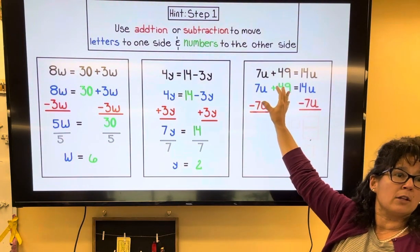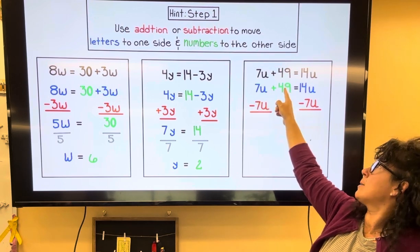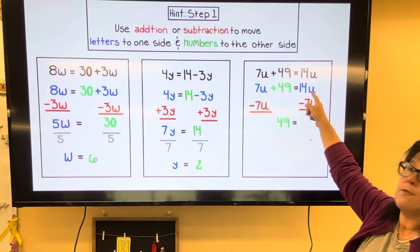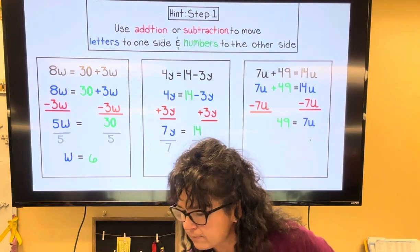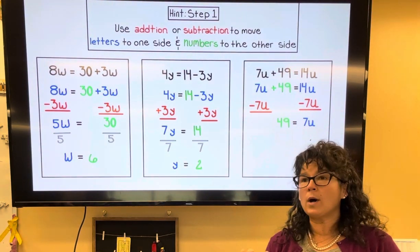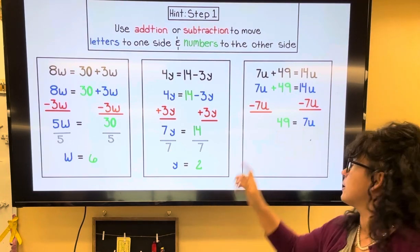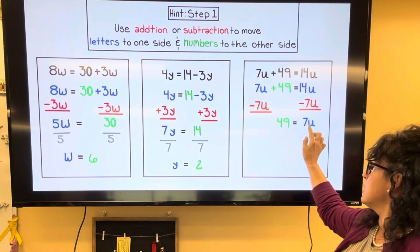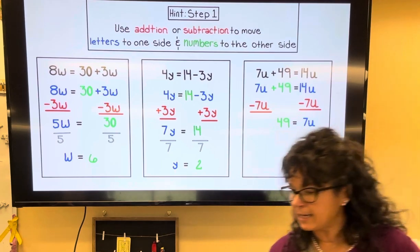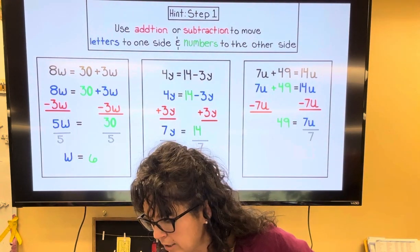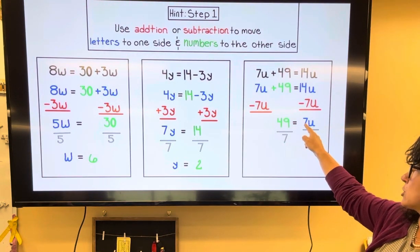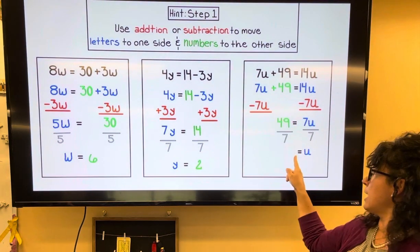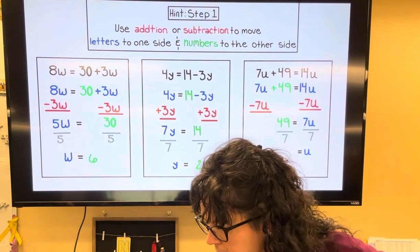On the left side, the 7u gets rid of that 7u, so I still have 49. Bring down the equal sign, and 14u minus 7u is 7u. Now, what is preventing u from being by itself? It's times 7 — a number next to a letter means multiplication. To undo multiplication, we divide. So I divide by 7 on both sides. The 7 cancels, u is by itself, and 49 divided by 7 is 7.